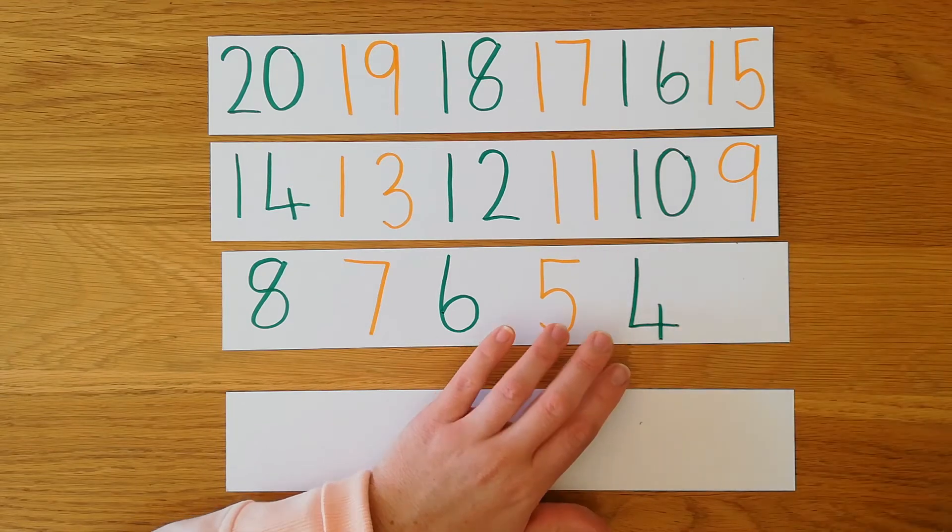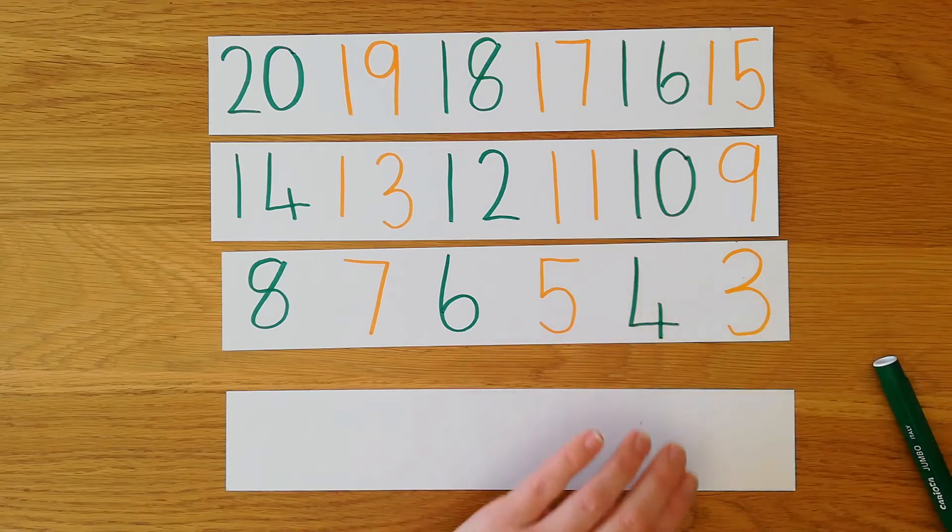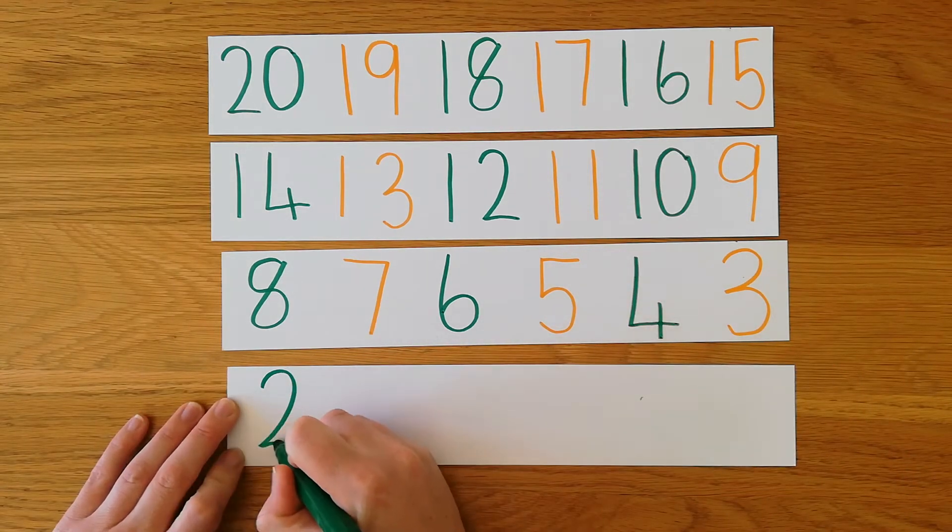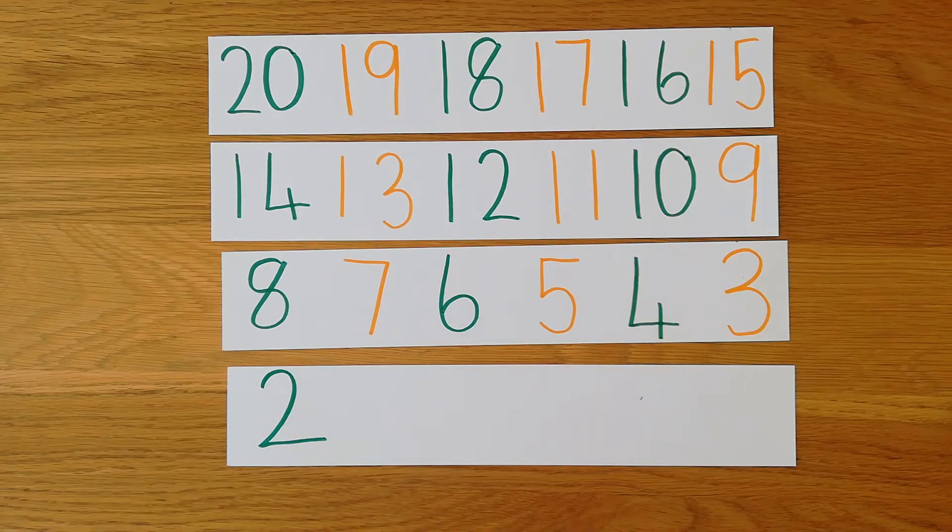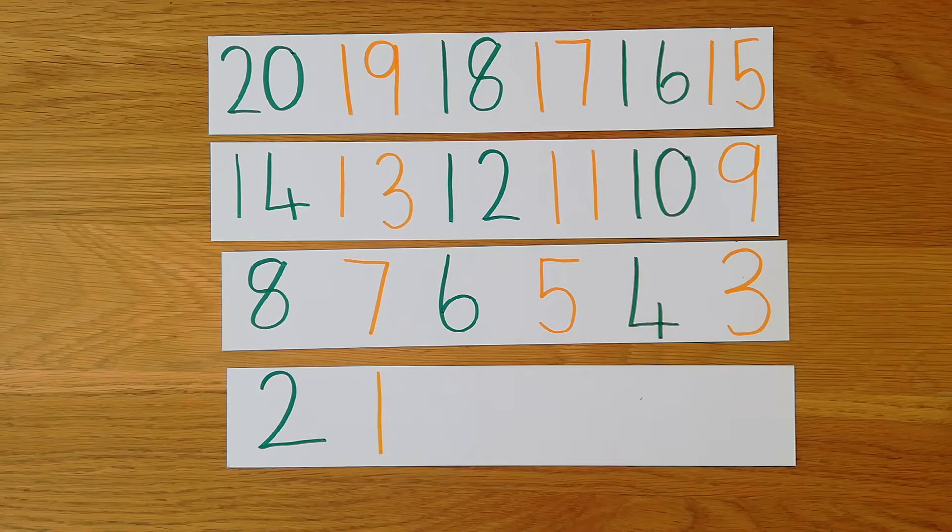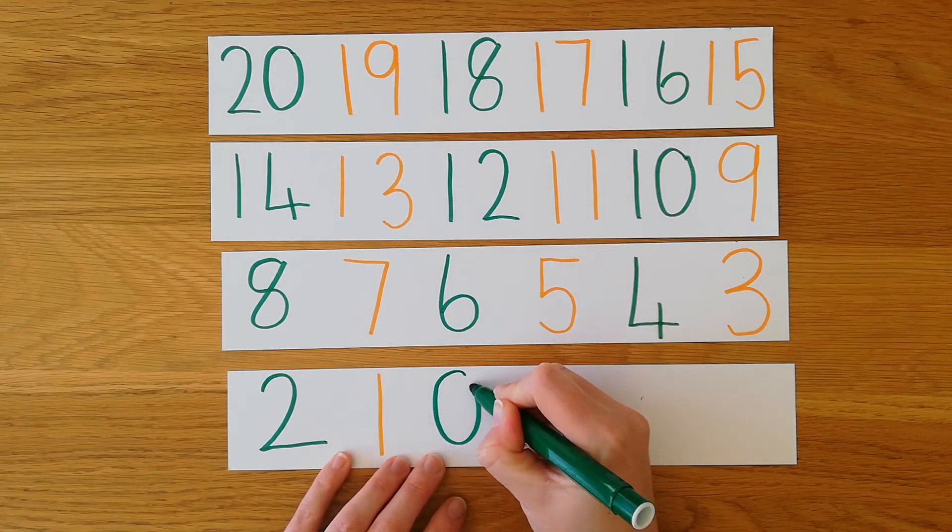Five, four, three, two, one. And if I had to keep going backwards, it would be zero.